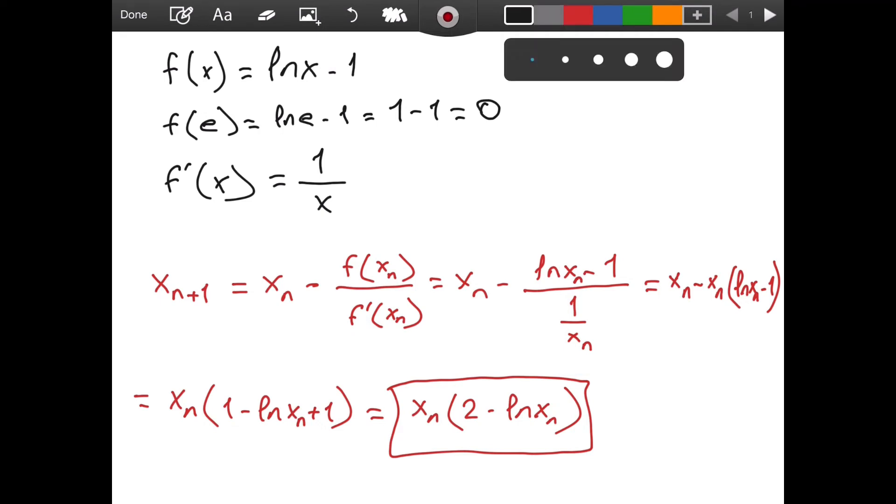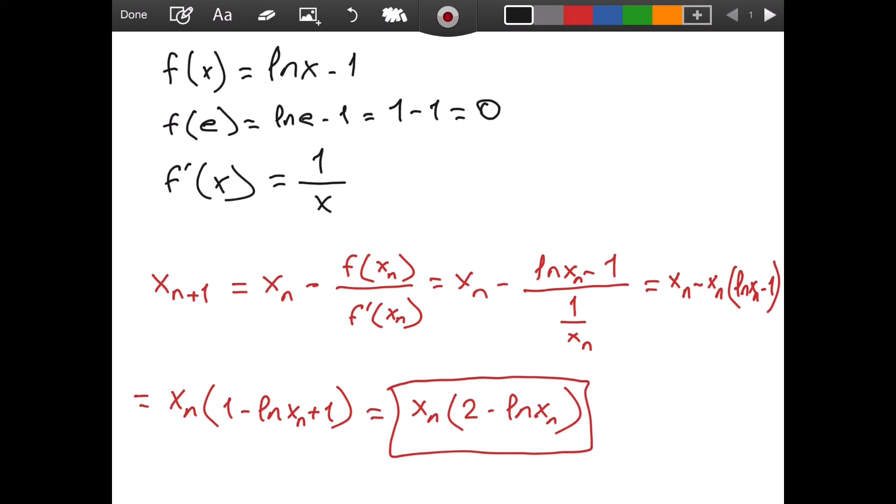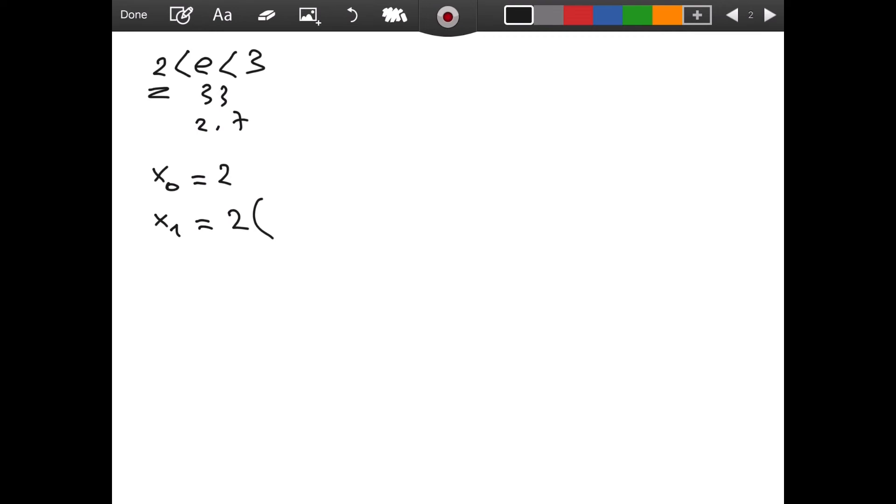We will use it to approximate the value of e. You probably know that e is between 2 and 3. It is greater than 2 and it is less than 3. It is actually something like 2.7. But let's say that you don't know it is 2.7. So you just choose 2 as your starting point. You make 2 as a guess. So your x0 is equal to 2. Then your x1 will be simply equal to, from the formula that we derived, 2 times 2 minus ln2. If you do that, and I am using my calculator to compute this value, you will get 2.613705639.